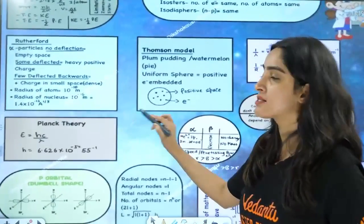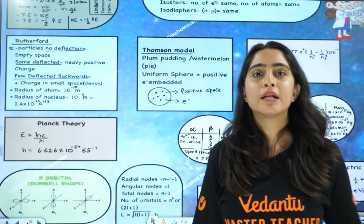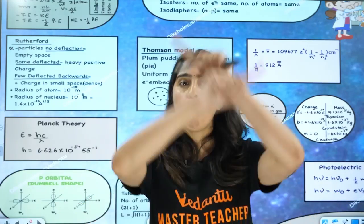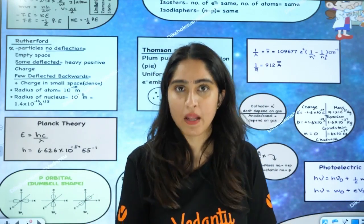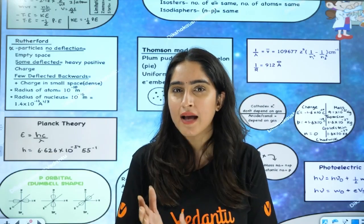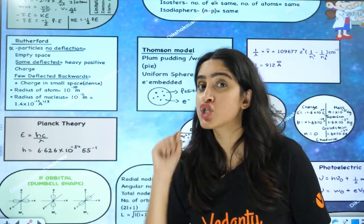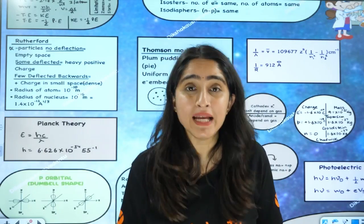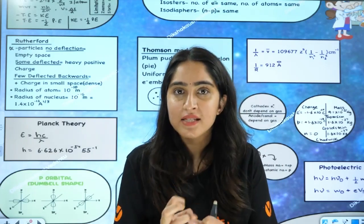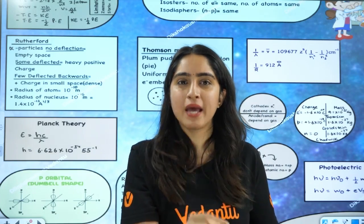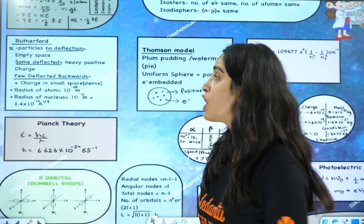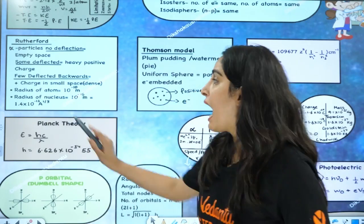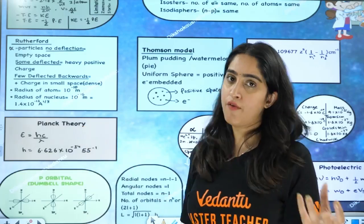Next, we have the Rutherford model. This model has three observations and three conclusions. When alpha particles show no deflection, that means most of the space inside the atom is empty. When some alpha particles are deflected by some angle, that means there is heavy positive charge in the center. When few alpha particles bounced back, that means the positive charge is very dense, located in a very small space. The radius of the atom is 10 raised to the power minus 10, and the radius of the nucleus is 10 raised to the power minus 15, and 1.4 × 10⁻¹³ A^(1/3).